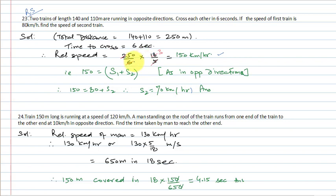In the last 3-4 questions we've been consistently using the concept of relative speed. Question number 24: A train 150 meters long is running at 120 km per hour. A man standing on the roof runs from one end to the other at 10 km per hour in the opposite direction. Find the time taken by the man to reach the other end.